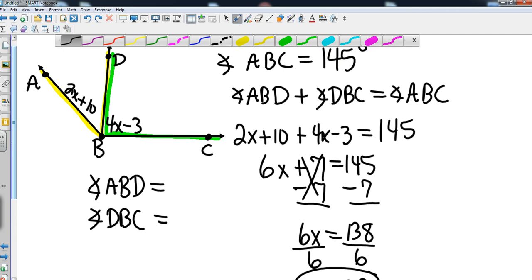So they might ask you what x equals. They might also ask you to find the angles, to find angle ABD and to find angle DBC. So that's piece of cake, we can just substitute our 23 in there. So for ABD, that's going to be 2 times 23 plus 10. So that's going to be 46 plus 10 which is going to give me 56 degrees. Now from this point I could go ahead and find out what DBC is, or I could subtract 56 from 145 and that would also get it. I'm going to go ahead and substitute it in just because I want to show that work.